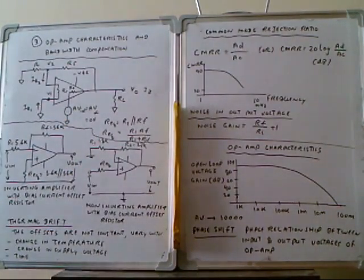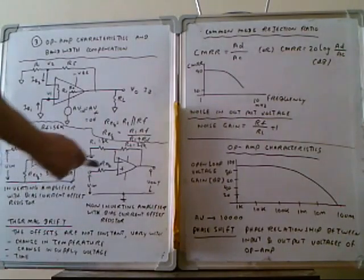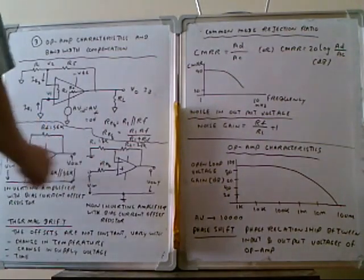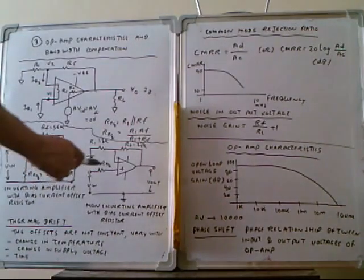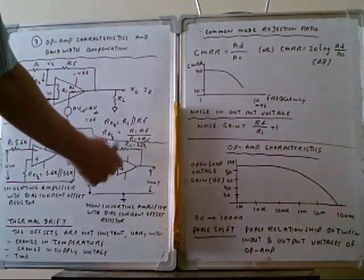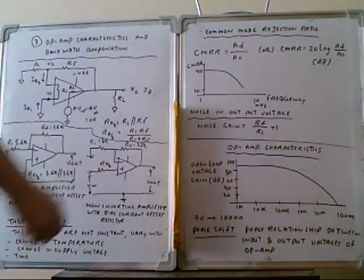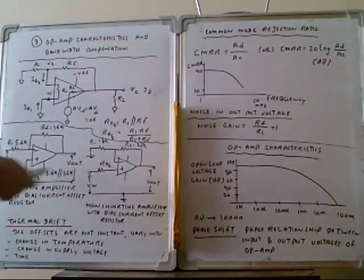We can draw the equivalent circuit for the operational amplifier. For the inverting op-amp configuration, R1 is placed here, Rf here, and the equivalent resistor here. For the non-inverting amplifier, the input is placed at the positive terminal. In the inverting configuration, the input is at the negative terminal. We connect R1, R2, and the equivalent resistor for both configurations.